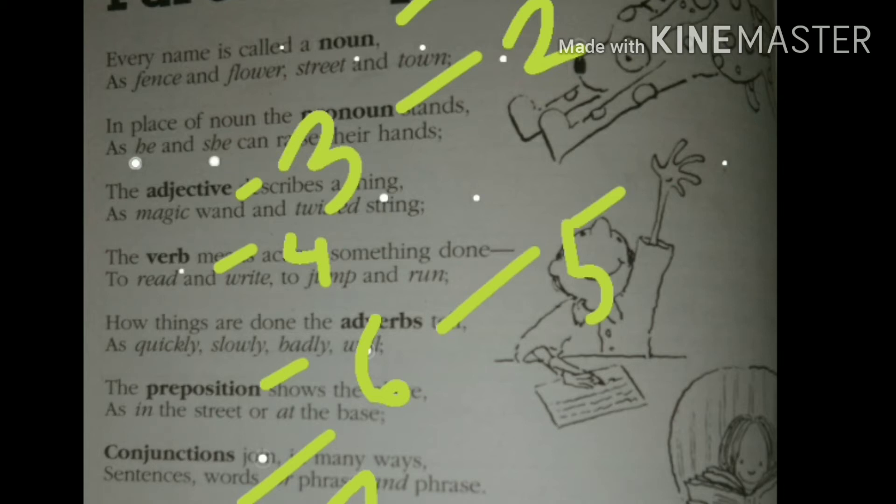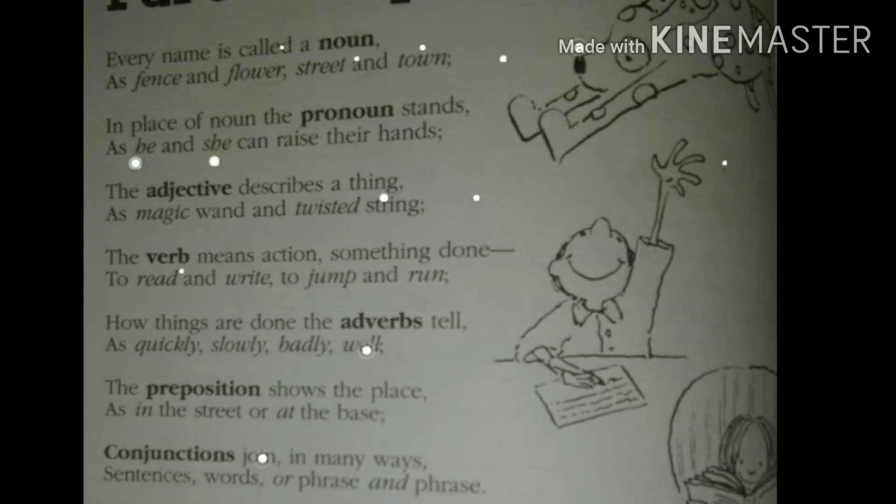So let's start with singing the song. Every name is called a noun. The names by which we call something, we ask for something, those names are called nouns. For example, we have here fence, flower, street and town. So generally, we call the things by their names. And these general names are called common nouns.